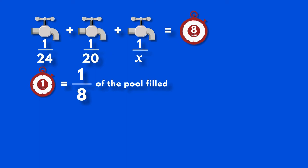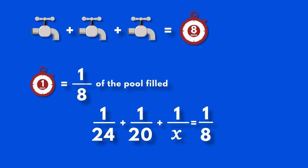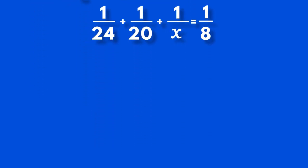Using what we know, we can express the situation with this equation. 1 over 24 plus 1 over 20 plus 1 over x equals 1 over 8. And when we solve the equation, we get our answer.